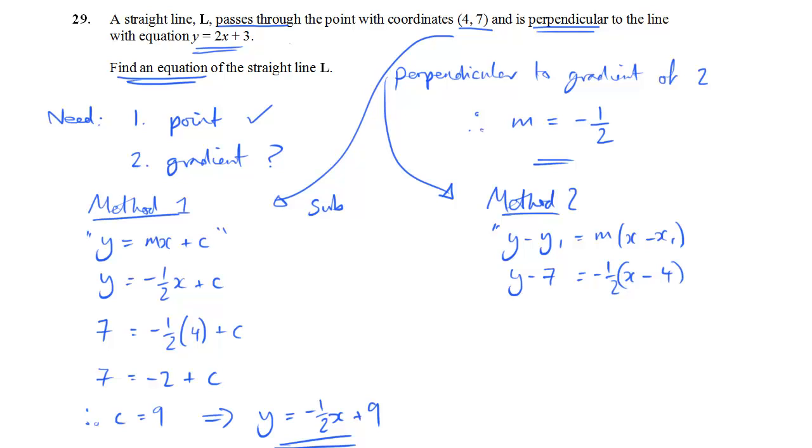So, minus 1 half x, and then minus 1 half times minus 4 is plus 2. So y minus 7 is minus 1 half x plus 2. And I'm simply going to add 7 to both sides, so I have y as the subject. y equals minus 1 half x plus 9. Thank goodness it's the same as before. And that is the end of the question.